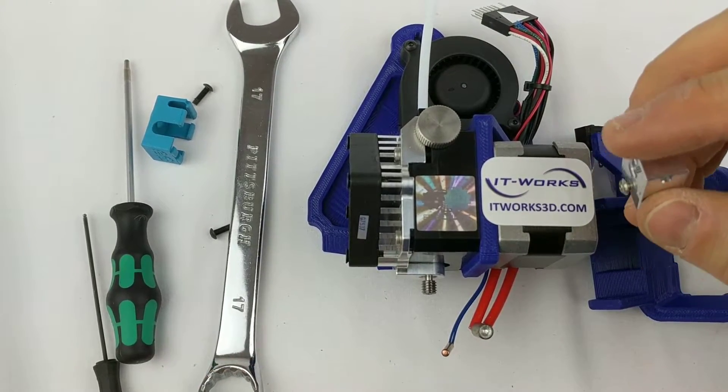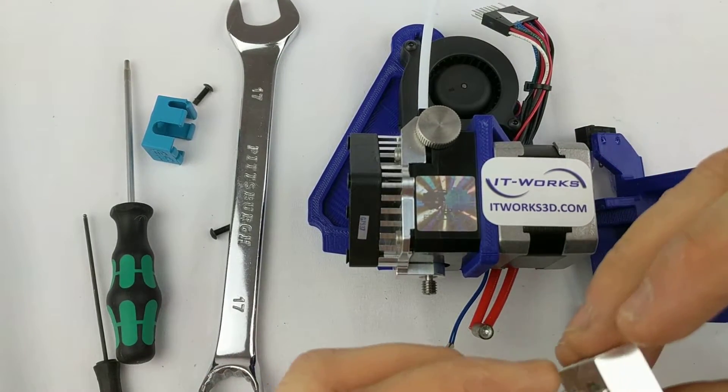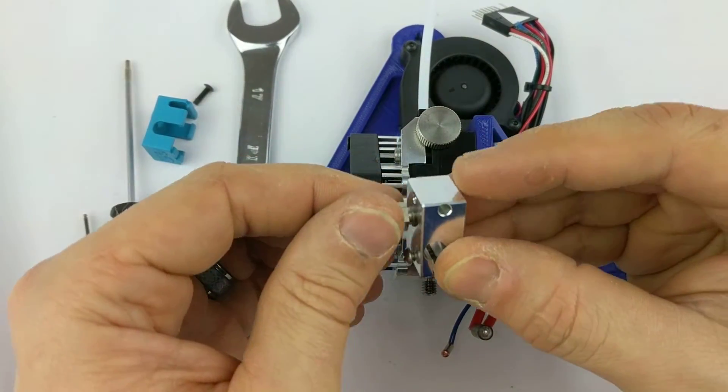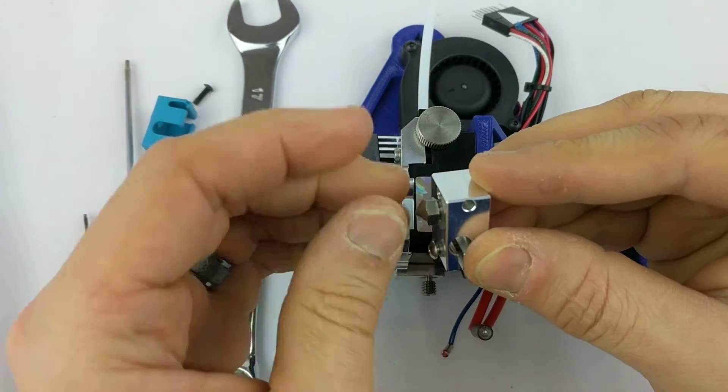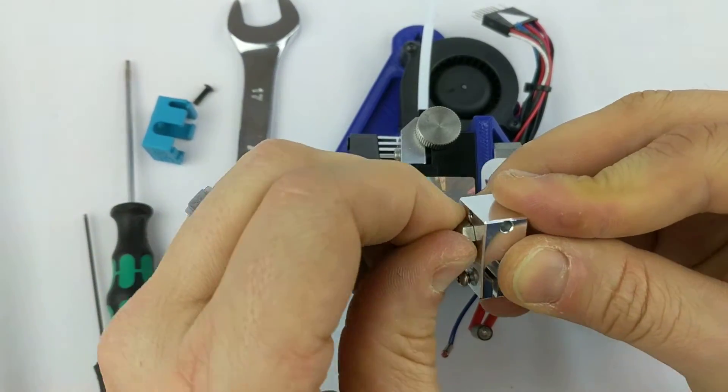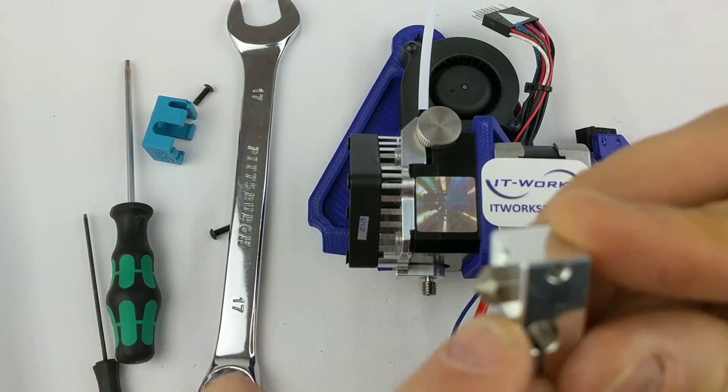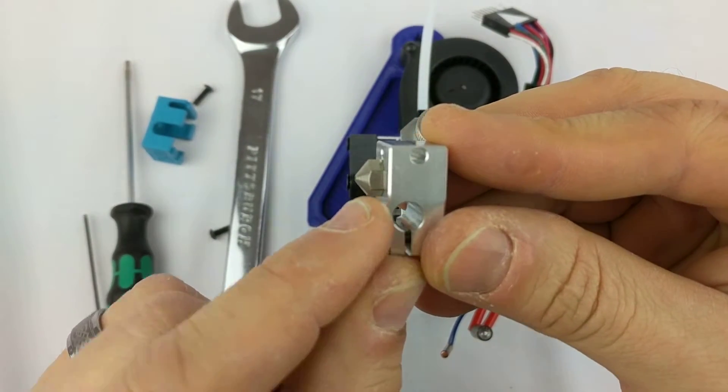What I'll do usually then is tighten the nozzle finger tight all the way down onto the face of the block here so that it is flat against there. There, nice and flat, finger tight.